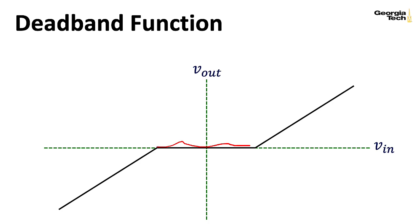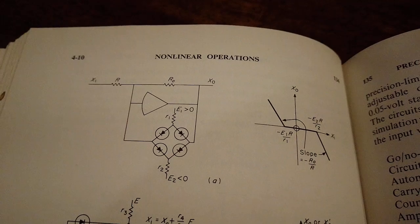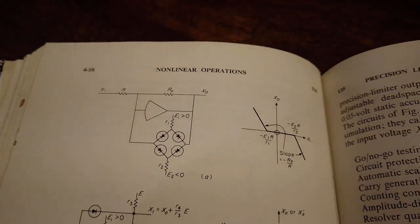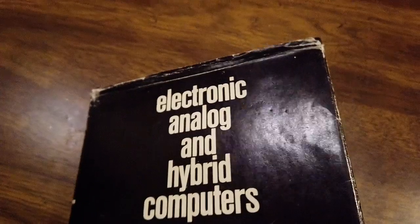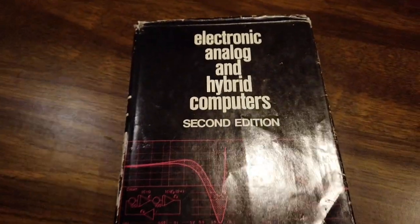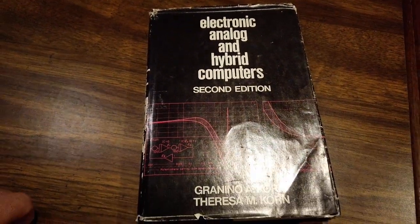So there's a region in here of different inputs where you get zero out, and you have to go past a certain threshold on either end for the output to actually start sliding off of the zero. Now I've seen these kinds of deadband nonlinearities in textbooks on analog computing, but all of those circuits involve diodes in some way.